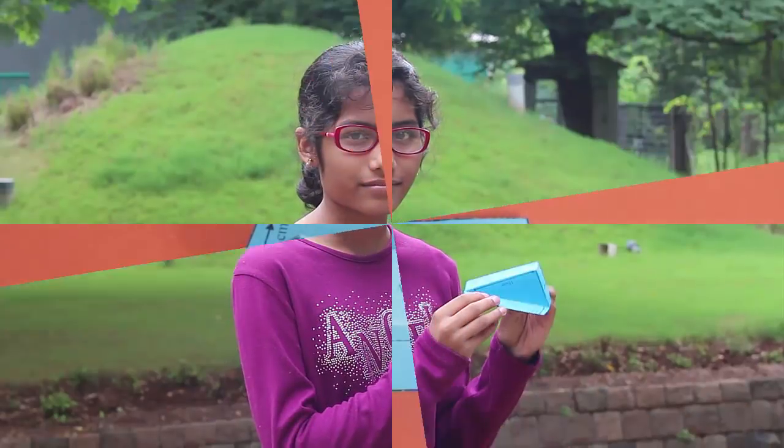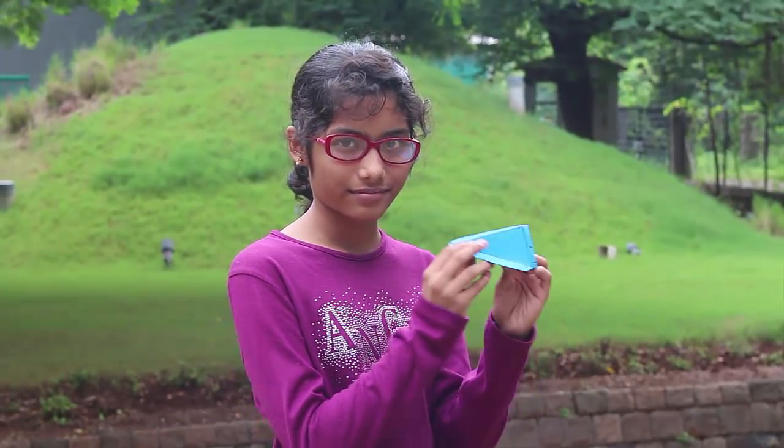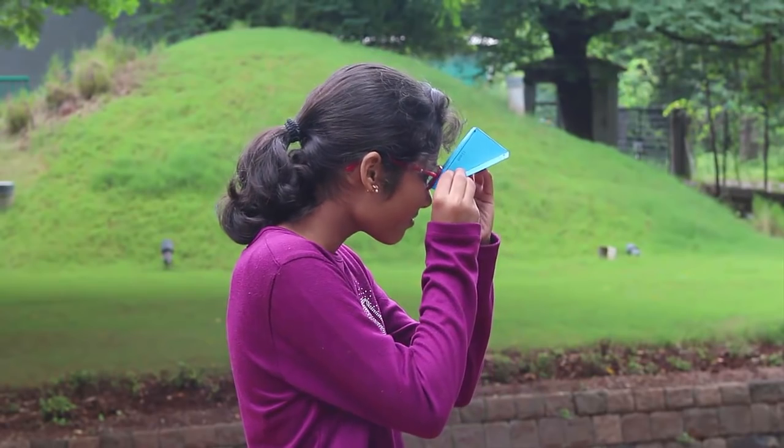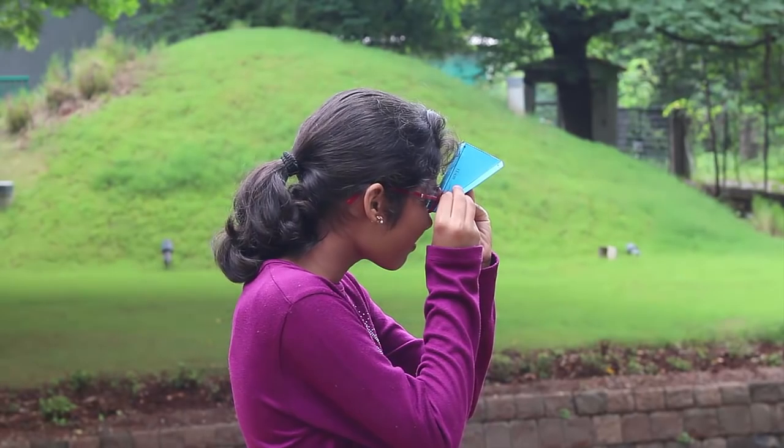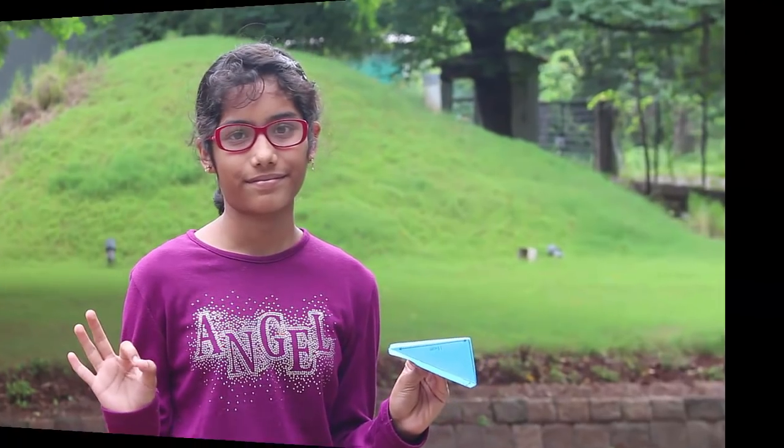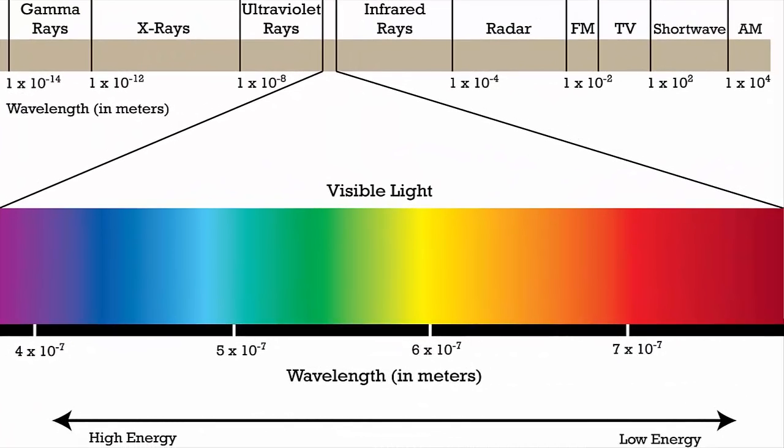Now the spectroscope is ready. Go out in the sun and place your eye on the slit of the long edge. Point the slant edge towards the sun. Sunlight will enter and the fine edges of the CD will diffract it into various beautiful colors, and you will see a beautiful, stunning spectrum.